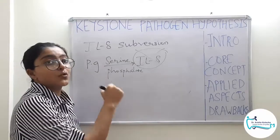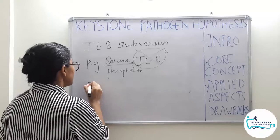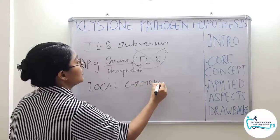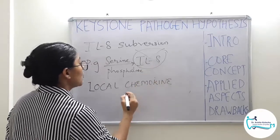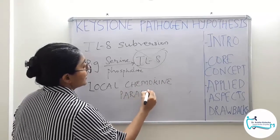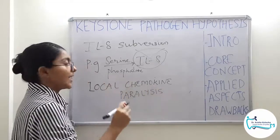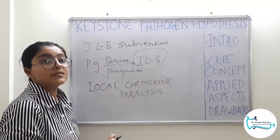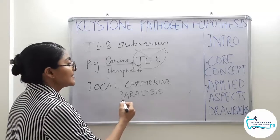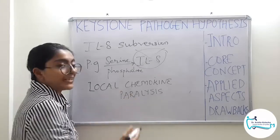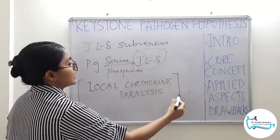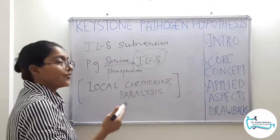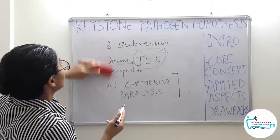This phenomenon is called local chemokine paralysis. It is 'local' because P. gingivalis interacts with interleukin-8 locally; 'chemokine' because interleukin-8 is a chemokine involved in chemotaxis; and 'paralysis' because the blockage of interleukin-8 synthesis heavily hampers chemotactic activity — in a sense, the chemotaxis phenomenon is paralyzed. Please remember this terminology; it is important from an exam point of view and as a short answer in theory exams.